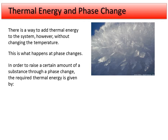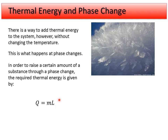Let's look at how much energy is required to go through a phase change. We have another equation: the heat required to go through a phase change equals the mass of the object multiplied by L, the latent heat — latent heat of fusion or latent heat of vaporization. There are different values depending on the phase change. Going from solid to liquid or liquid to solid uses one value of L; going from liquid to gas or gas to liquid uses a different L.